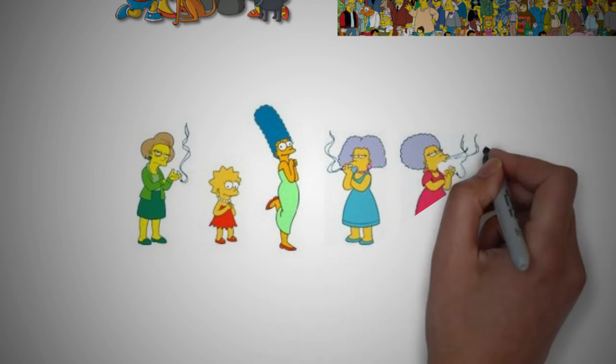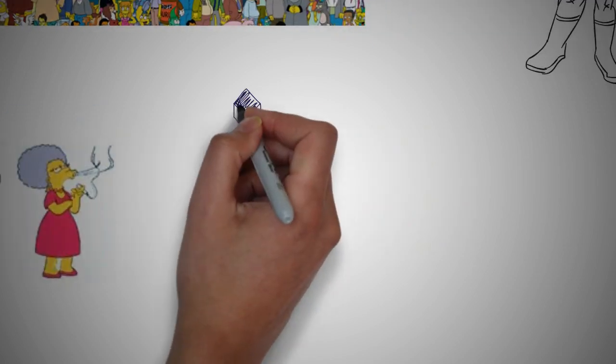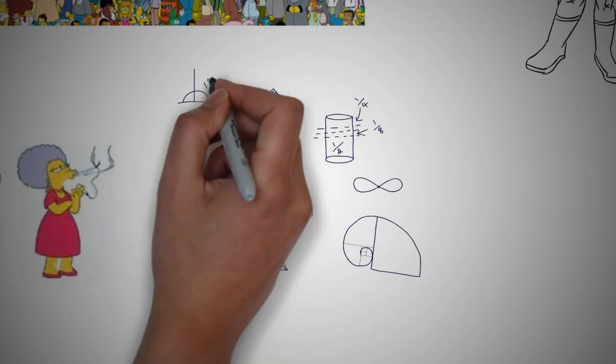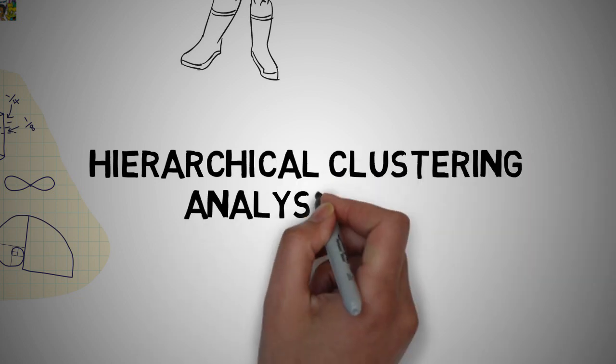Let's take a look at the subset of Simpsons characters. How would we go about clustering these characters into groups or classes for example? We can use an algorithm called Hierarchical Clustering Analysis or HCA.